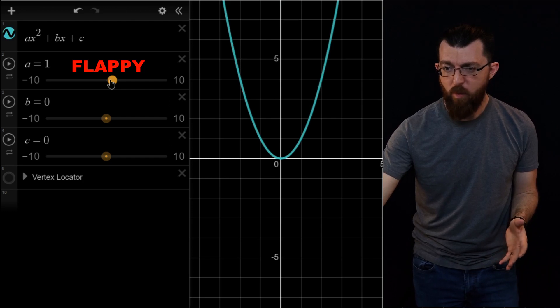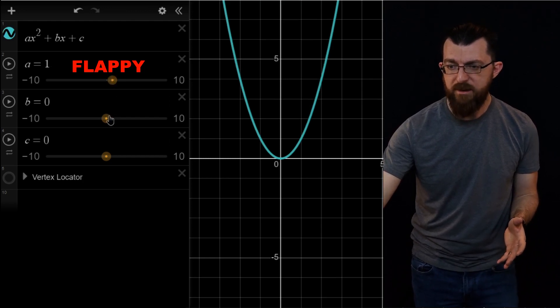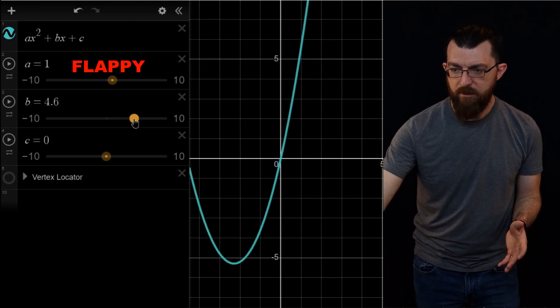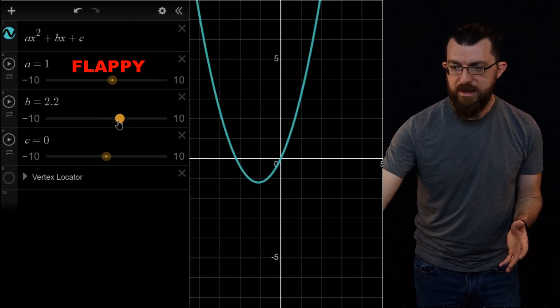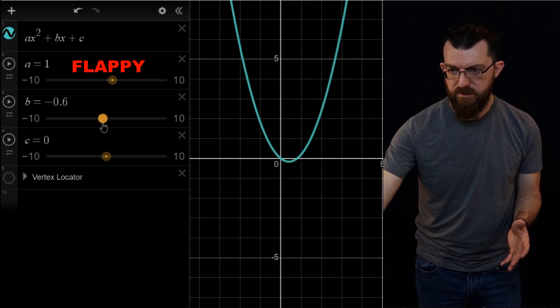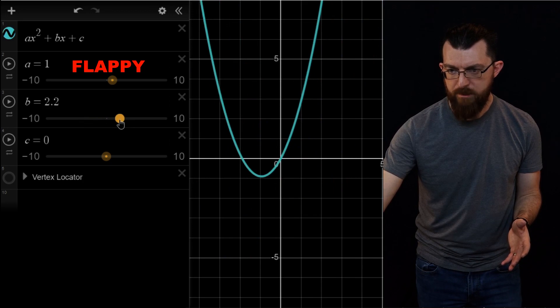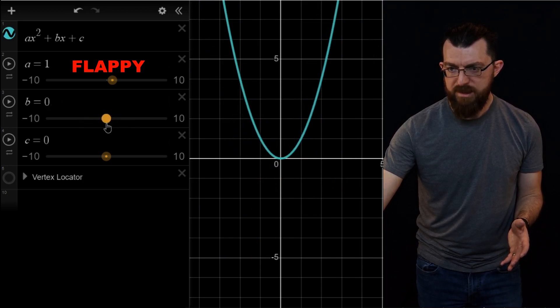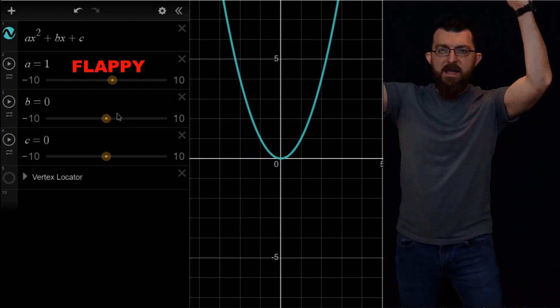Alright, let me put this back on one. And now let's see what b does. If I move b up, it looks like it slides down into the left. And if I move b down, it slides down into the right. Okay, I can't seem to move this parabola upwards with b.